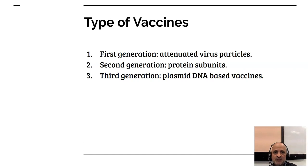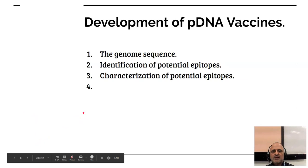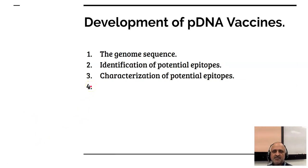Most of the vaccines available today are second generation or subunit vaccines. The third generation vaccines comprise plasmid DNA based vaccines — these consist of a plasmid DNA construct which contains a promoter binding site specific to the host as well as the antigenic principle. Plasmid DNA vaccines can be developed readily and deployed in response to pandemics. To develop plasmid DNA vaccines, we need the genome sequence, identify potential epitopes, and characterize the potential epitopes prior to development.